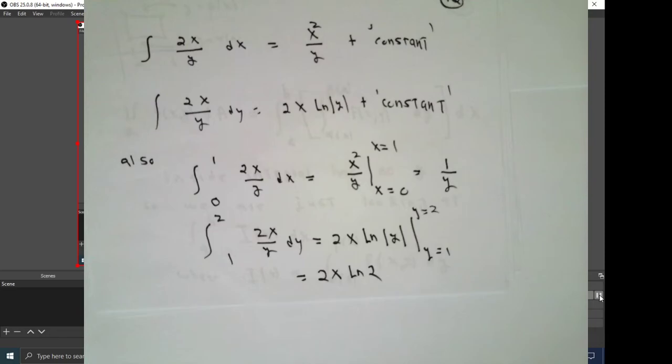The integral of 2x over y integrated with respect to y instead. The 2x is a constant factor. If y is the variable, antiderivative for 1 over y is natural log absolute y. Again, plus something that's really not necessarily a constant. It just doesn't depend on y.